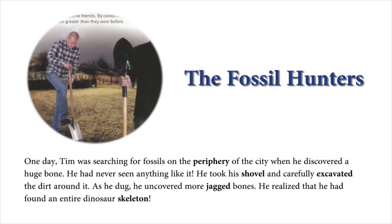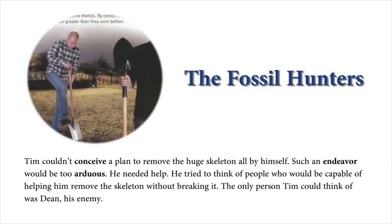He took a shovel and carefully excavated the dirt around it. As he dug, he uncovered more jagged bones. He realized that he had found an entire dinosaur skeleton. Tim couldn't conceive a plan to remove the huge skeleton all by himself. Such an endeavor would be too arduous. He needed help. He tried to think of people who would be capable of helping him remove the skeleton without breaking it. The only person Tim could think of was Dean, his enemy.